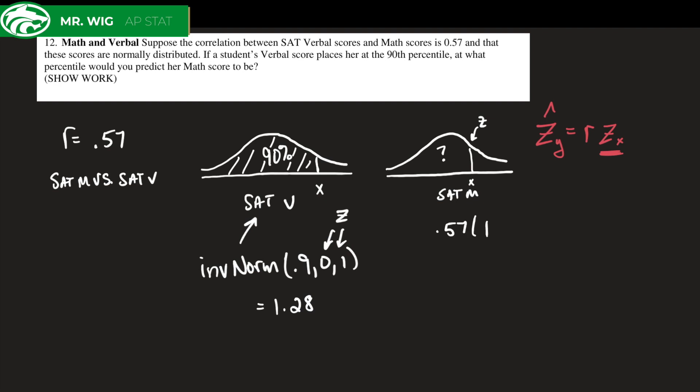So if we do that, we're going to say 0.57 times 1.28, that's going to give me 0.73. Now a lot of you would stop here and say, oh well, it must be in the 75th percentile and that would be incorrect.